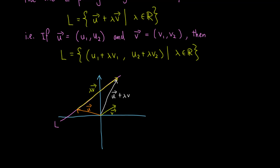By varying the value of λ, u + λv can get to any point on L, so it describes all the points on L. In this case, v is called a direction vector of L, because it really describes the direction of L.